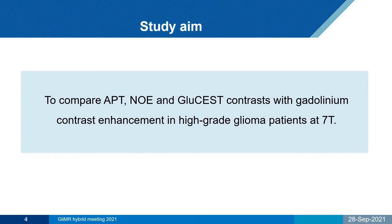Therefore, our goal was to compare APT, NOE, and glutamate-weighted CEST contrasts with gadolinium contrast enhancement in high-grade glioma patients at 7 Tesla.